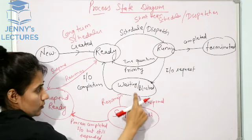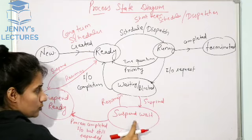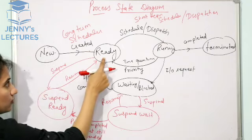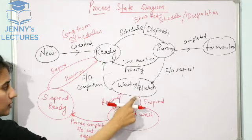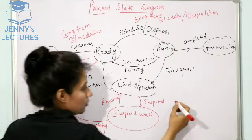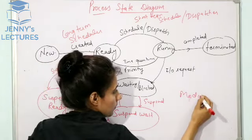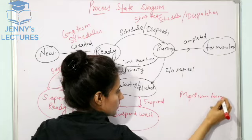The third type is the medium-term scheduler. The suspension from waiting/blocked to suspend wait, and from ready to suspend ready — these transitions are handled by the medium-term scheduler.